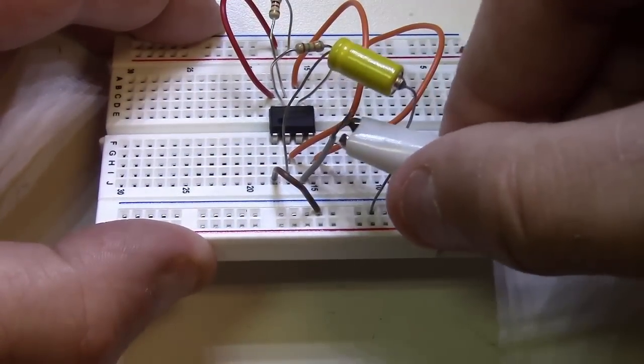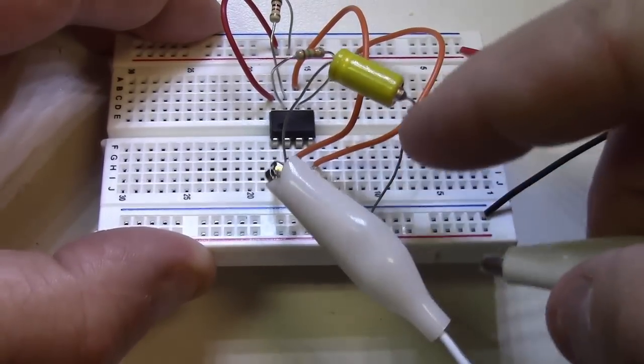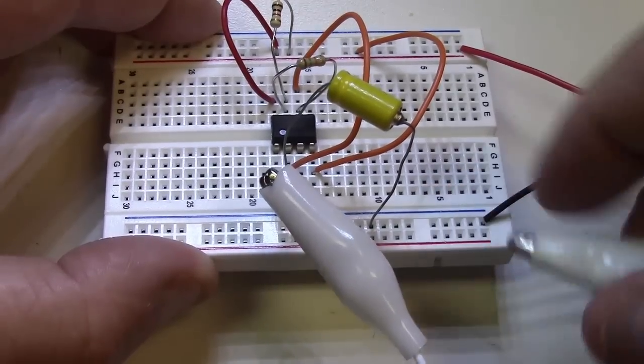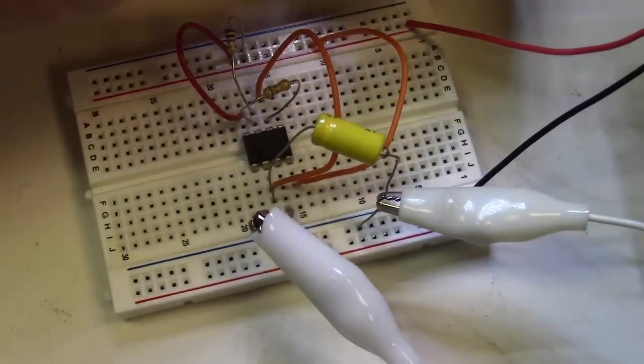We're going to hook this to ground, and since we already have this wire for the capacitor going to ground, I'm going to hook to that. And we're going to hook this to a nine volt battery.